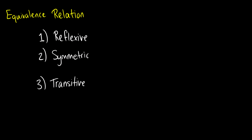So just to review what this means: for reflexivity, for any element a, we have that a is related to a. So what this looks like with a point is we get a loop. So a would be related to a.